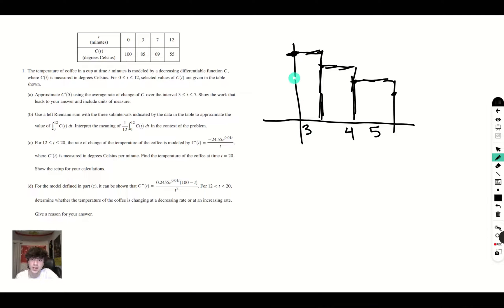So now we have to find the area of the three boxes and add them up. Area is going to be base times height. Height of this one is 100 times 3 is 300. Then we have four times 85, which is 340. And then finally, we have five times 69, which is 345, which gives us a final answer of 985. And now when we divide by 12, we will get an answer of approximately 82.01.